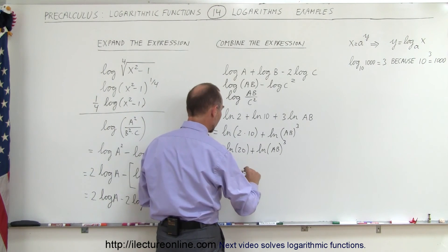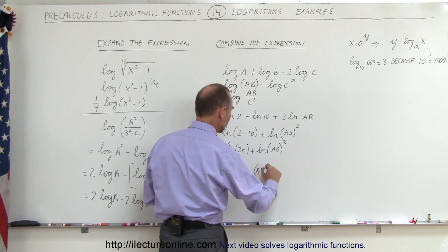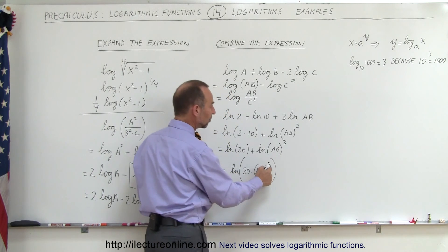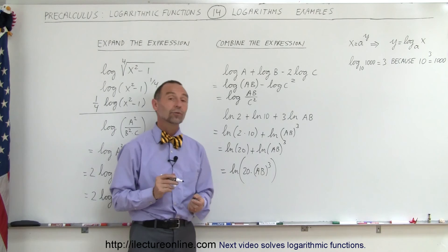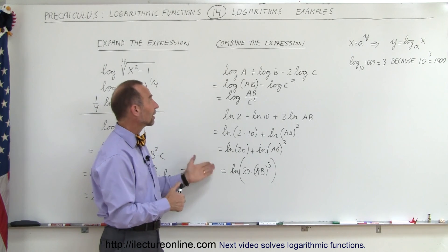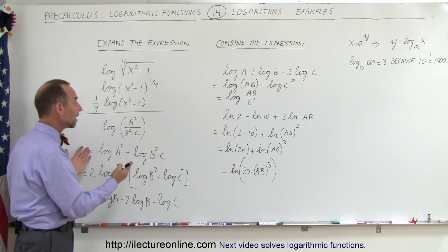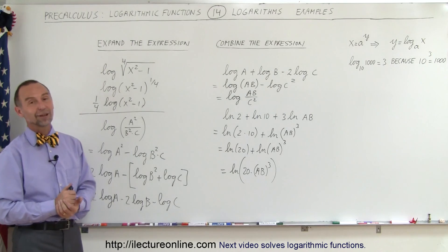And this can be written as the natural log of twenty times a times b to the third power, and we'll put a parenthesis like this, you can expand it by saying a to the third power, b to the third power, but we really don't need to do that, so here we have the case where we combine the expressions, and here we have the case where we expand the expressions simply using those laws of logarithms, and that's how it's done.